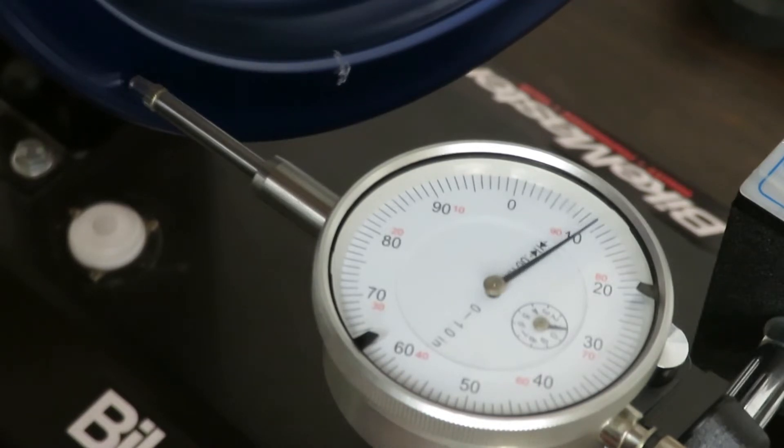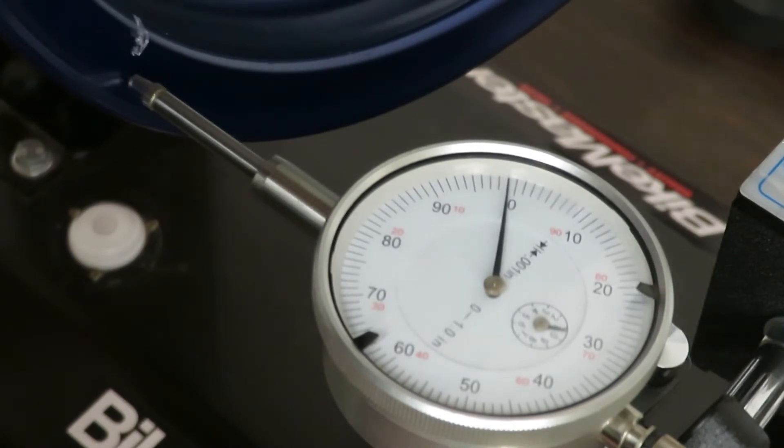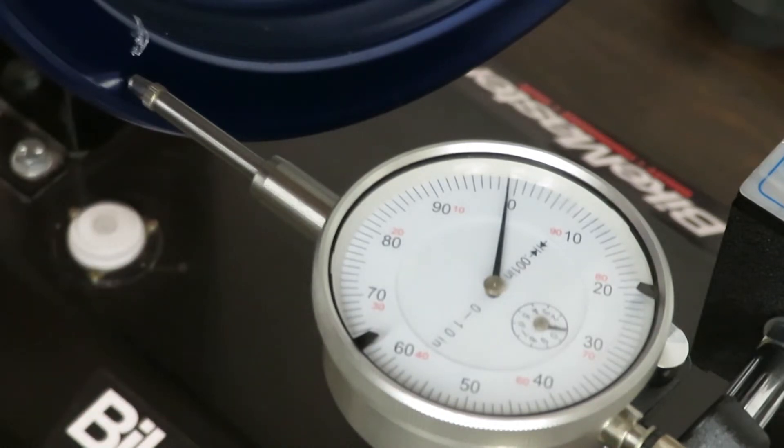What you'll want to do is make a mental note of how far the needle swings either way relative to zero. Do the math, and then that will give you your total runout in thousands of an inch. So we just slowly spin the wheel. Bring it back to zero. And then we can calculate what the axial runout is.